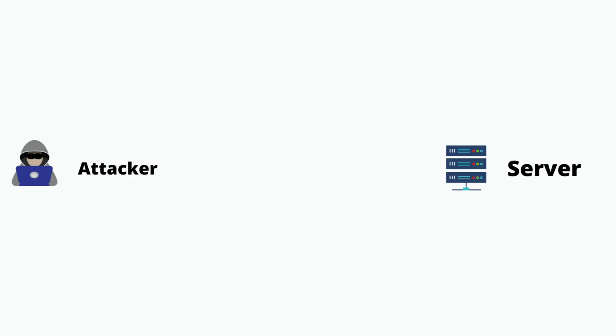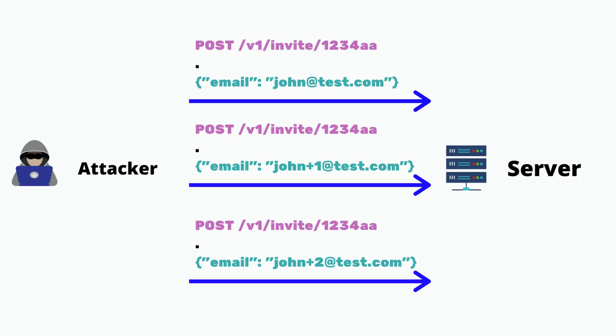Some applications allow inviting members to a team via an invite link. A race condition bug during sign-up with that link might allow an attacker to create more than one account, establishing a backdoor account that persists on the team even after the attacker's legitimate account is removed. The same bug can also bypass limitations to gain access to premium features, like adding more users to a team than the plan allows.